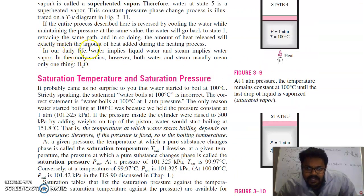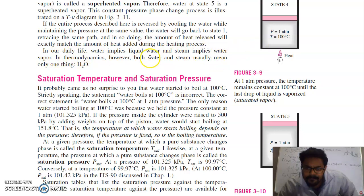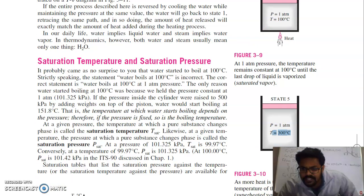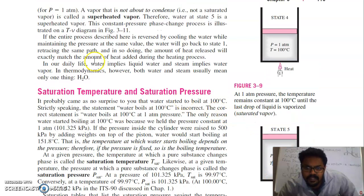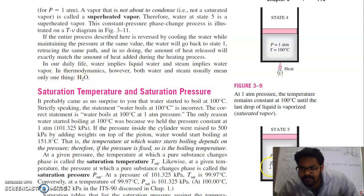In our daily life, water implies liquid and steam implies water vapour. In normal cases, we use 'water' for liquid water, and for superheated vapour we consider it as steam. Both water and steam usually mean only one thing — H₂O — with the same chemical formula. In thermodynamics, we are more concerned with this chemical formula.